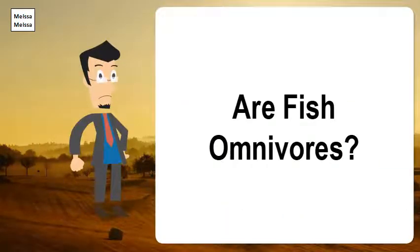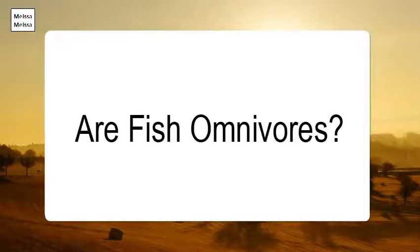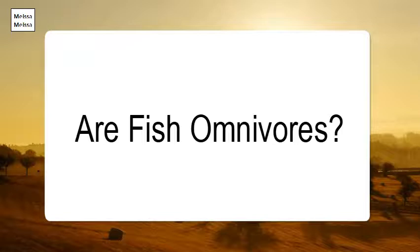Are fish omnivores? The chart indicates whether a fish is classified as a herbivore (H), carnivore (C), or omnivore (O), and offers good choices for both the staple diet and supplementary diet. Some fish, such as cichlids, are listed as belonging to more than one category depending on the particular variety.